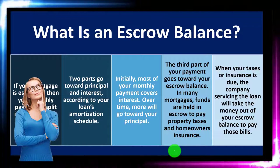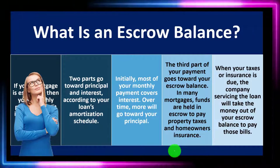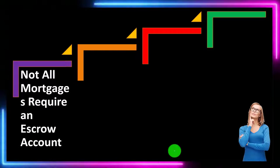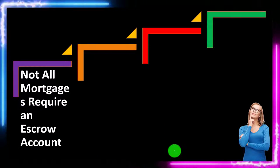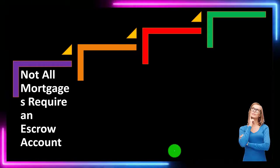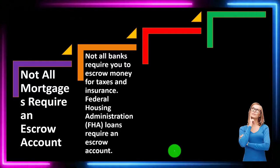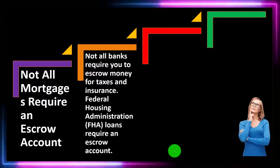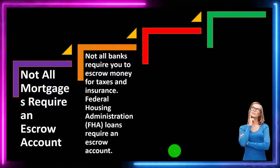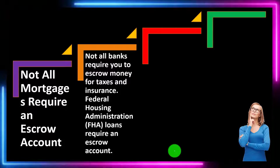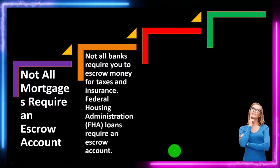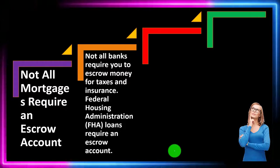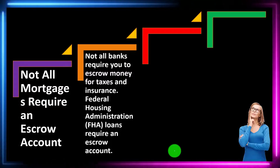When your taxes and insurance are due, the company servicing the loan takes the money out of your escrow balance to pay those bills. Not all mortgages require an escrow account. If they don't, you'll simply be paying the principal and interest payments, and then separately paying the property taxes and insurance when they're due — possibly semi-yearly or yearly — which will be a bigger cash flow you'll need to budget for yourself.